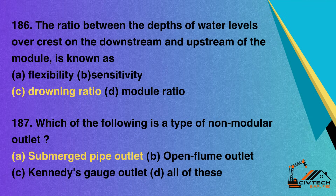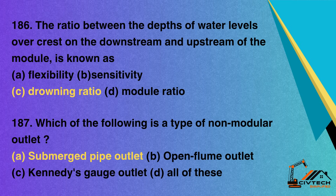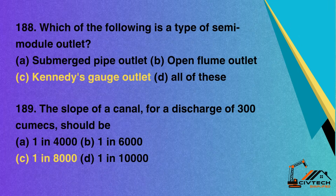Question 186: The ratio between the depths of water levels over crest on the downstream and upstream of the module is known as — A. Flexibility; B. Sensitivity; C. Drowning Ratio; D. Module Ratio. Correct option: C. Drowning Ratio. Question 187: Which of the following is a type of non-modular outlet? A. Submerged pipe outlet; B. Open flume outlet; C. Kennedy's gauge outlet; D. All of these. Correct option: A. Submerged pipe outlet. Question 188: Which of the following is a type of semi-module outlet? A. Submerged pipe outlet; B. Open flume outlet; C. Kennedy's gauge outlet; D. All of these. Correct option: C. Kennedy's gauge outlet.